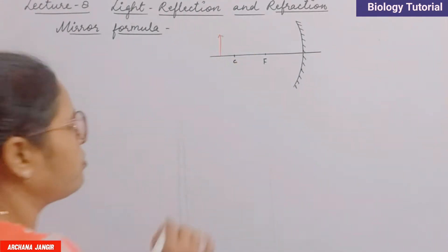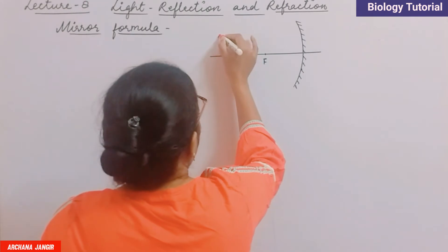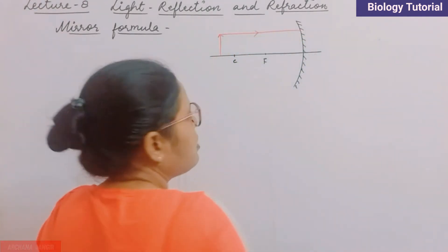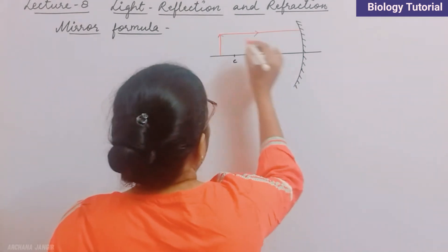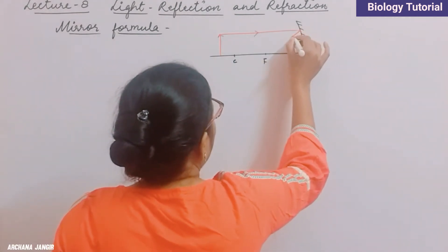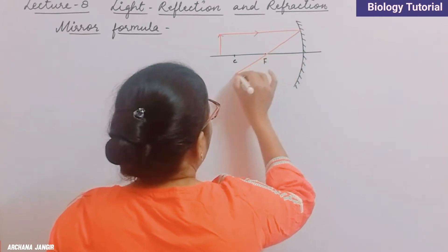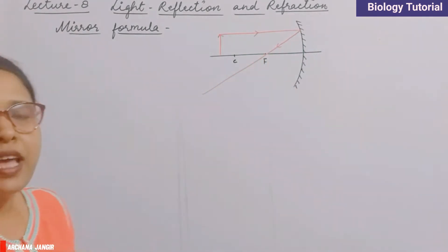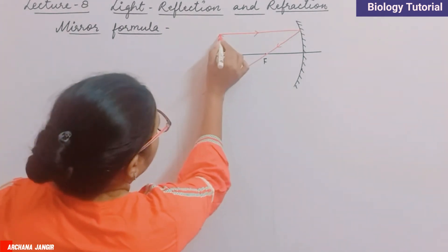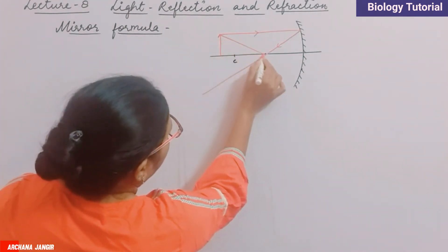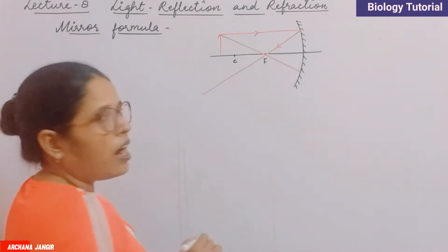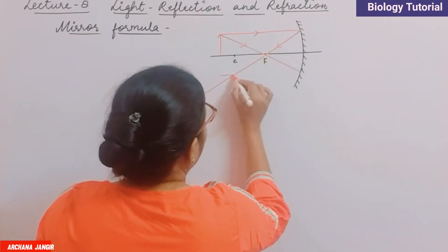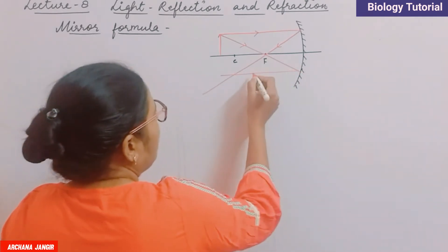This is the object. The first ray comes parallel to the principal axis, and after reflection it goes through the focus. The second ray is incident from the focus and after reflection it goes parallel to the principal axis.